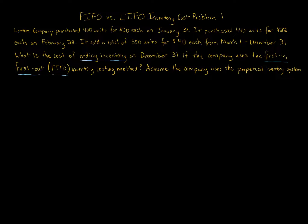We're looking for ending inventory on December 31st using the FIFO method. When setting up these questions, after determining what's being asked, you always want to set up the inventory layers — the layers of when the company purchased inventory. Go chronologically. Information might be given in reverse chronological order or mixed up, so always organize it chronologically. This ensures you apply the same approach consistently whether using FIFO, LIFO, or weighted average.